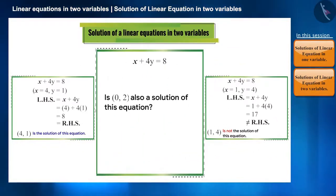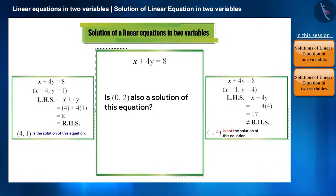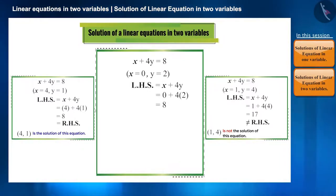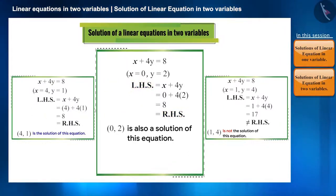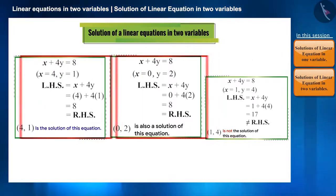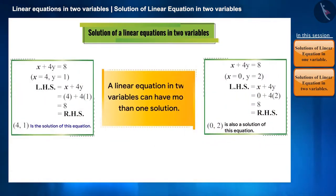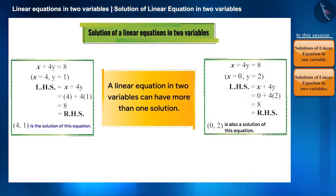Is (0, 2) also a solution of this equation? Let's see. Substituting x = 0 and y = 2 will make the value of the equation equal to 8. RHS is equal to LHS, so we can say that (0, 2) is also a solution of this equation. We have now found two solutions to this equation, so we can say that a linear equation in two variables can have more than one solution.